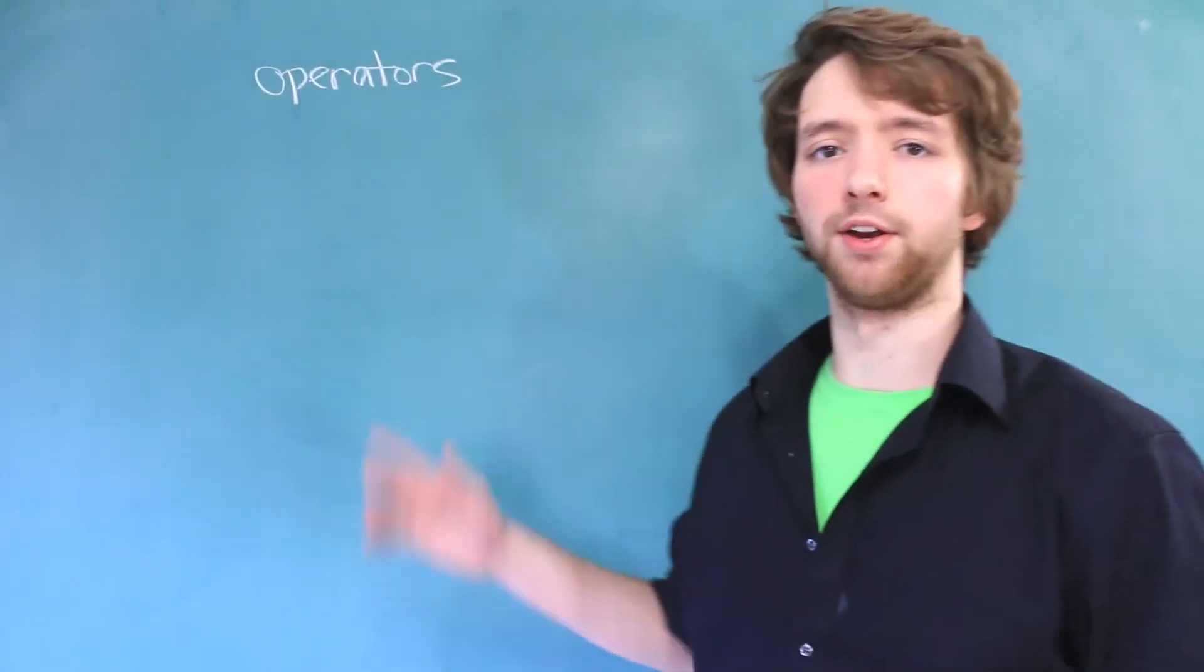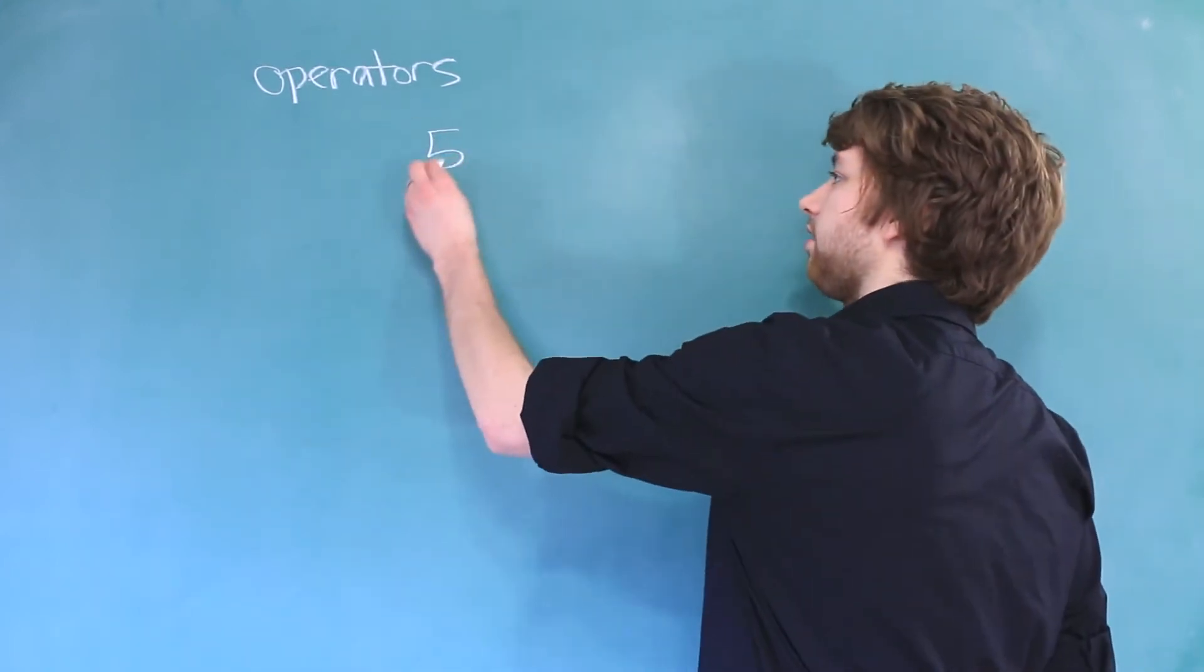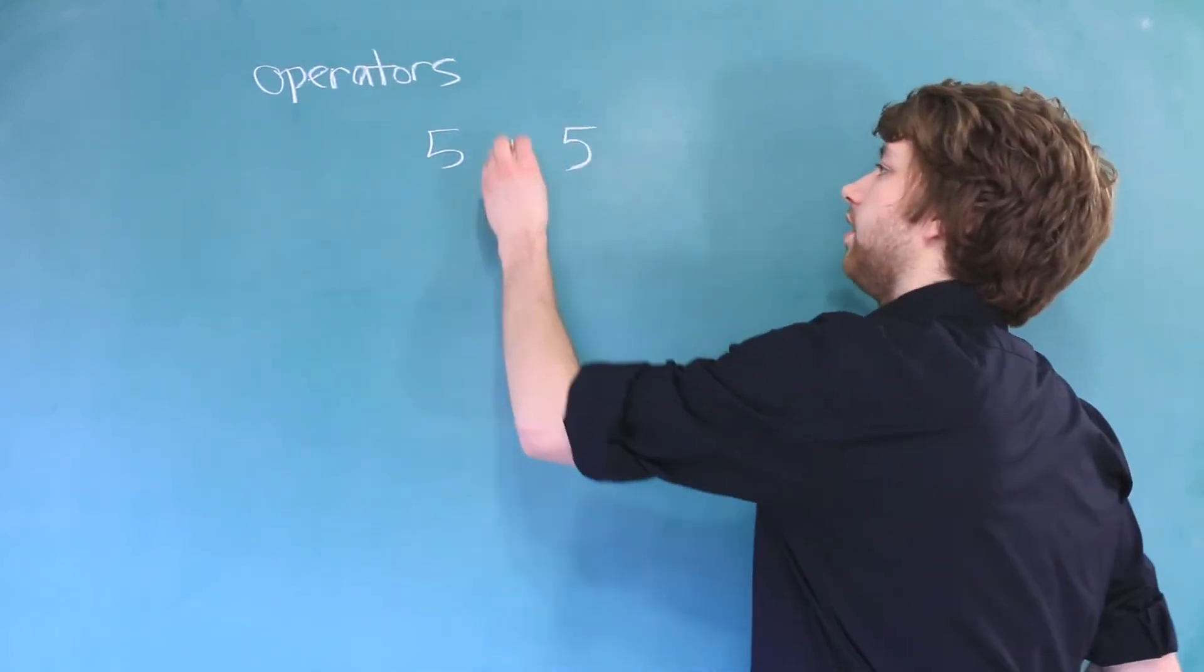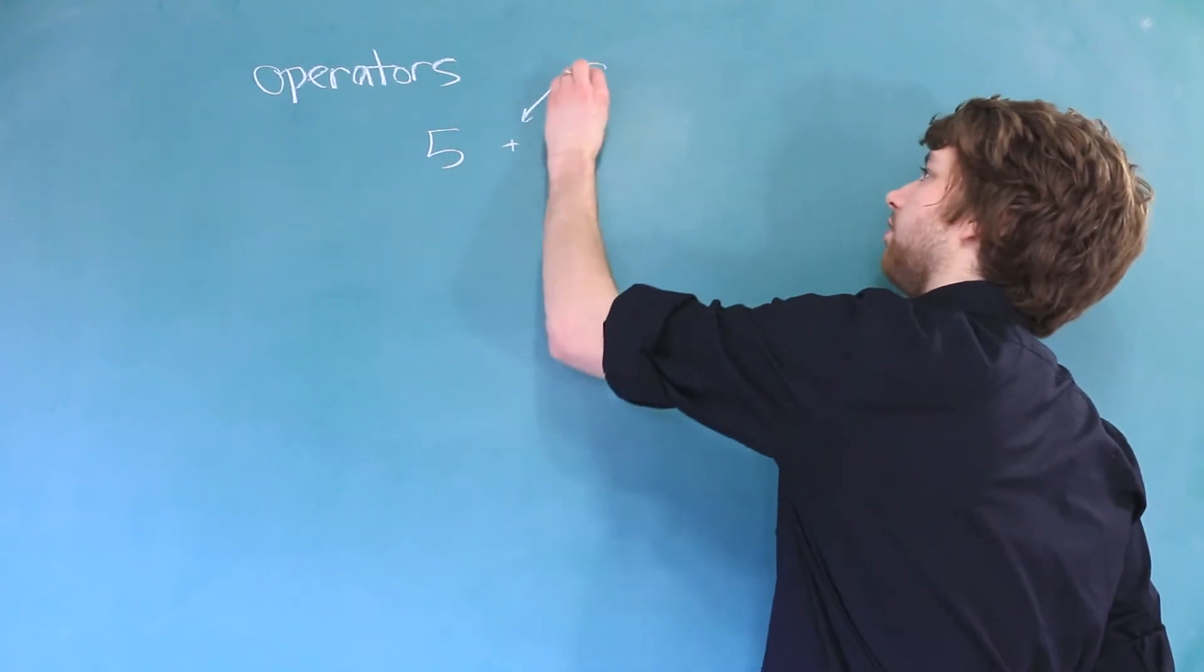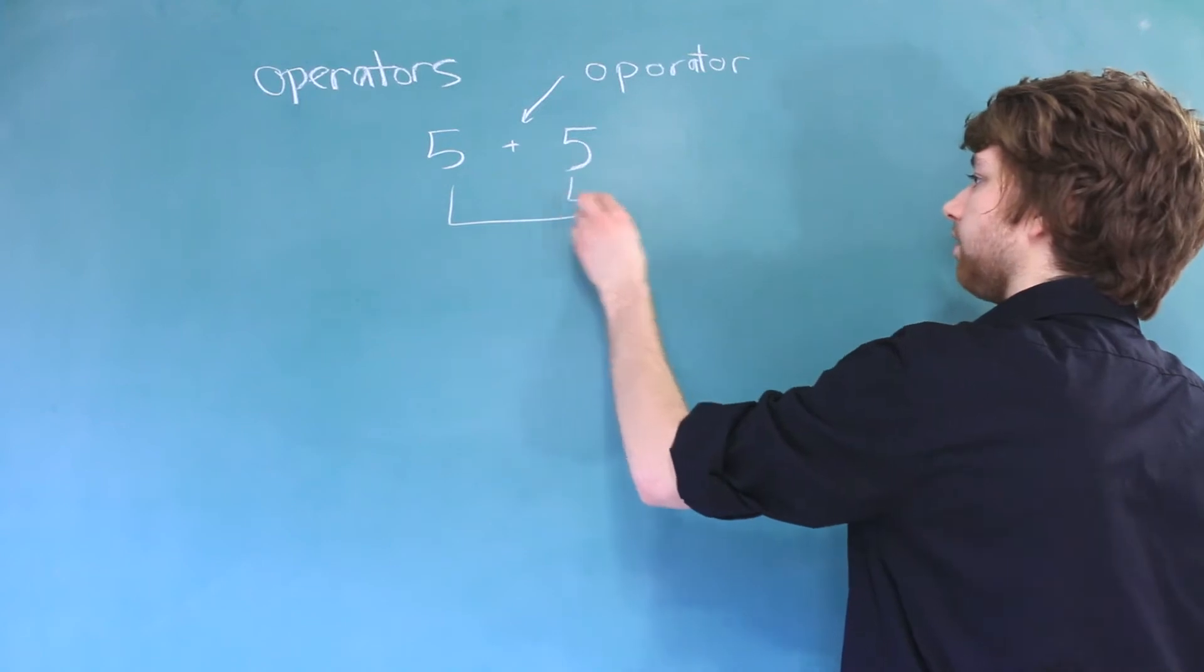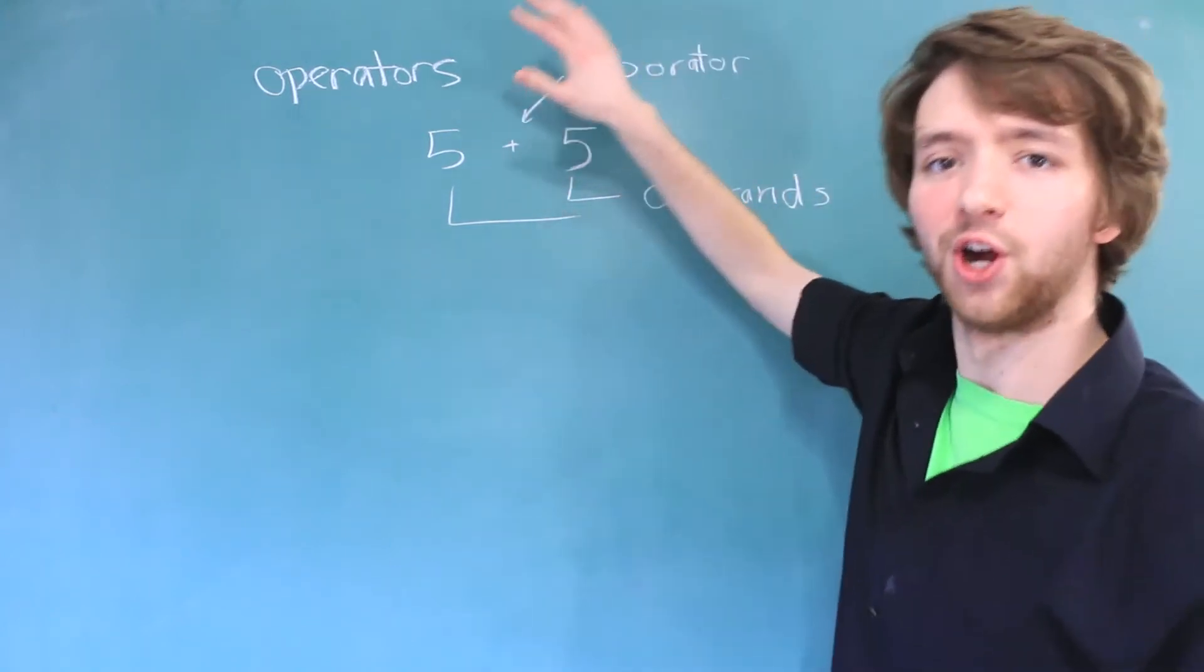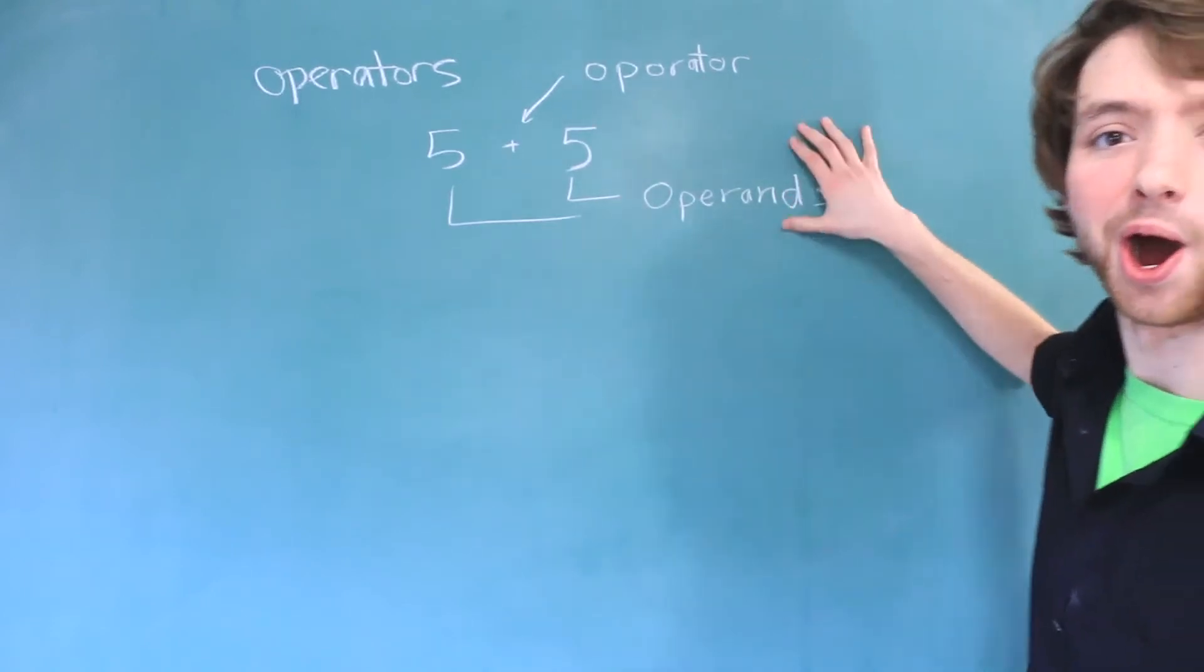The easiest example of using operators is in an arithmetic expression, such as 5 plus 5. This plus sign is an example of an operator. Both of these are examples of operands. So the things that the operators work on are called patients. Kidding, operands.